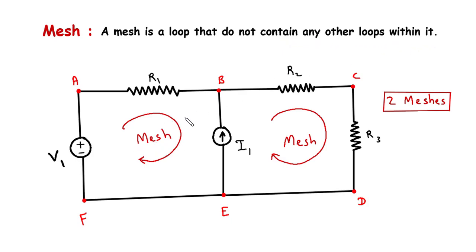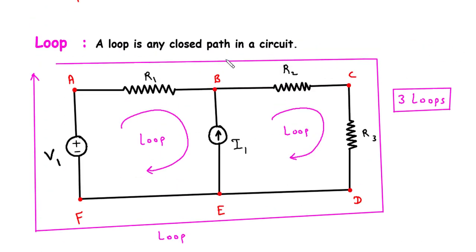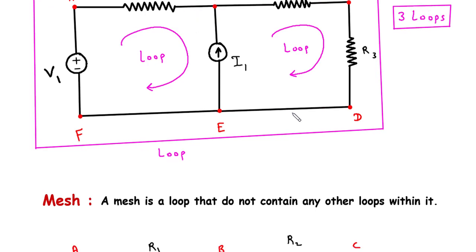So mesh 1 (A, B, E, F, A) is also a loop, and mesh 2 (B, C, D, E, B) is also a loop. But in the case of the outer loop A, B, C, D, E, F, A — this is not a mesh, because it contains other loops within it. So this is the difference between loop and mesh.